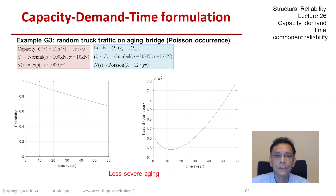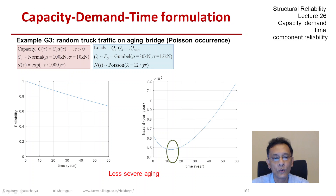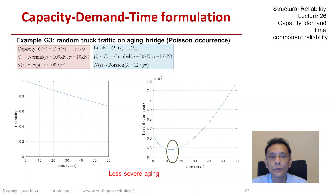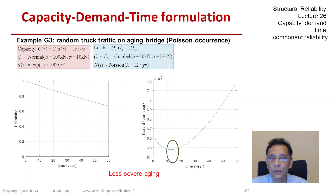The hazard function does something interesting with the milder aging. The hazard function initially drops — there is a decreasing failure rate — and then somewhere around 15 years of age it reverses course. The effect of proof loading caused by heavy trucks is now completely overtaken by the aging process, and after about 15 years the hazard function keeps climbing.